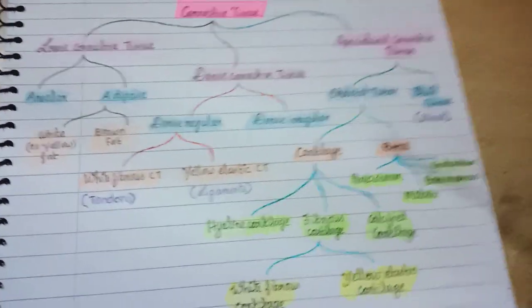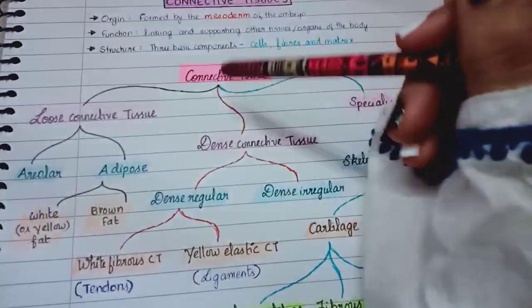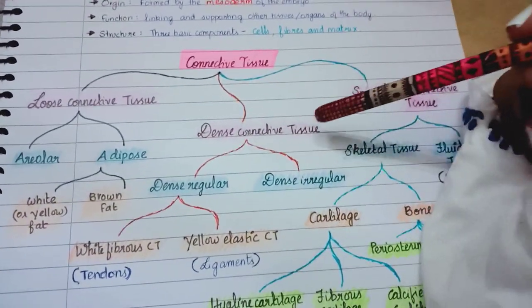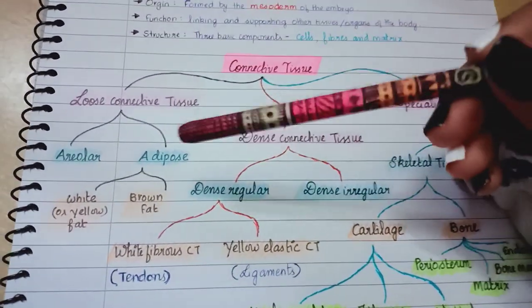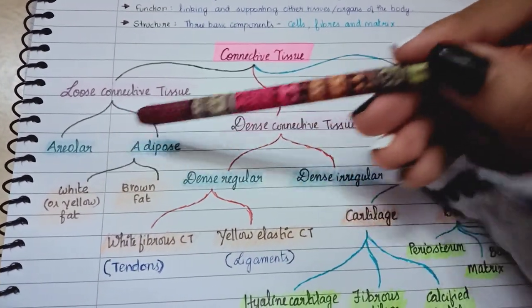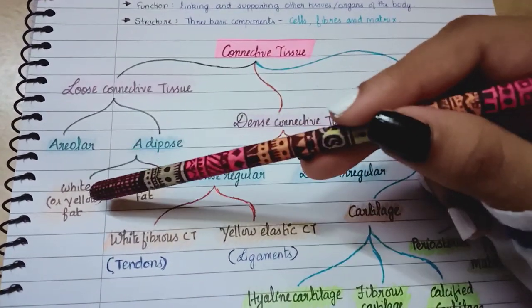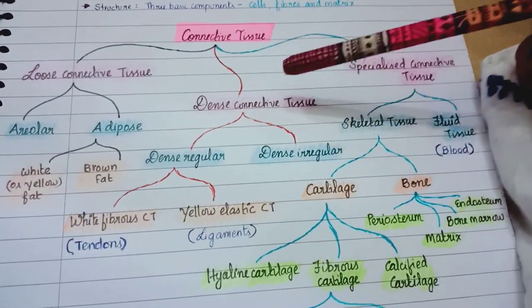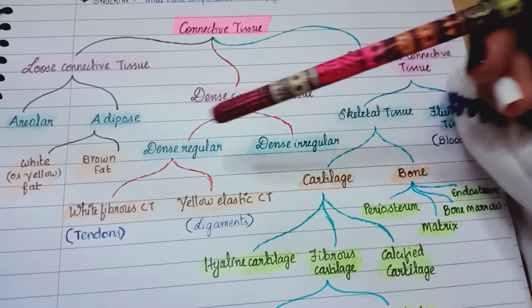I have made a flow chart of connective tissues. Connective tissue is of three types: loose connective tissue, dense connective tissue, and specialized connective tissue. Loose connective tissue consists of areolar and adipose. Adipose consists of white fat and brown fat. Then we have dense connective tissue, which is dense regular and dense irregular.